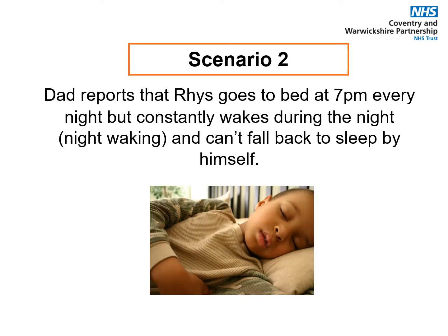In scenario 2, Dad reports that Rhys goes to bed at 7pm every night but constantly wakes during the night and can't fall back to sleep by himself. It's important to identify why Rhys might be waking: too much sleep during the day, going to bed too early, and sleeping in all impact nighttime sleeping. Speak to school if you have concerns about daytime sleeping. Reduce contact — if the child gets up to seek an adult or to play, put them straight back to bed with minimal interaction. Avoid interactions during the night such as toilet stops, drinks, snacks, or taking them downstairs, as they will quickly learn to expect this. Give them a reason to stay in their own bed, linked to their interests but avoiding anything too stimulating.